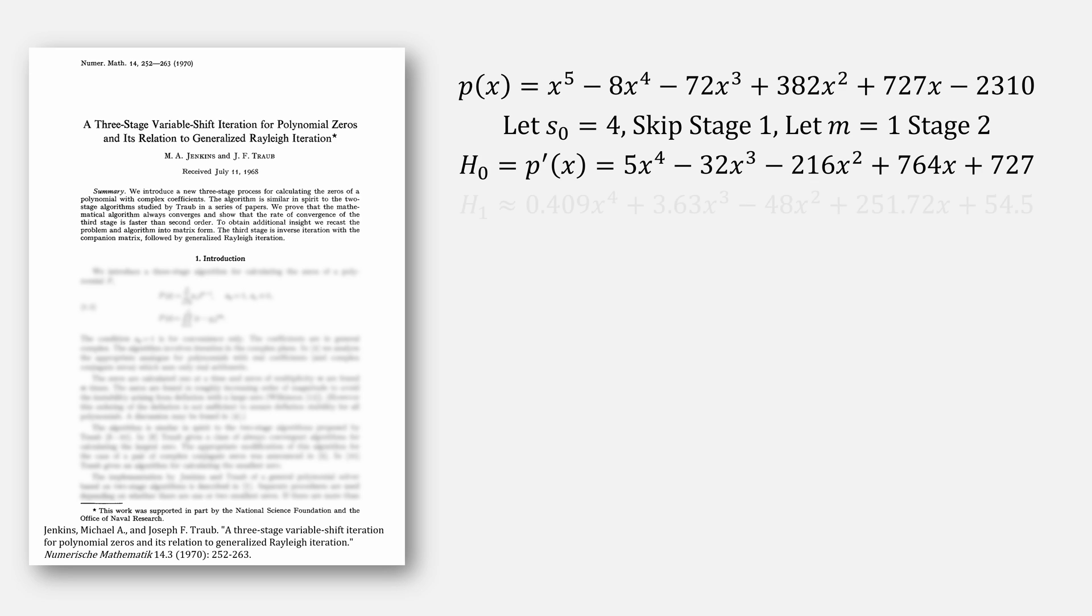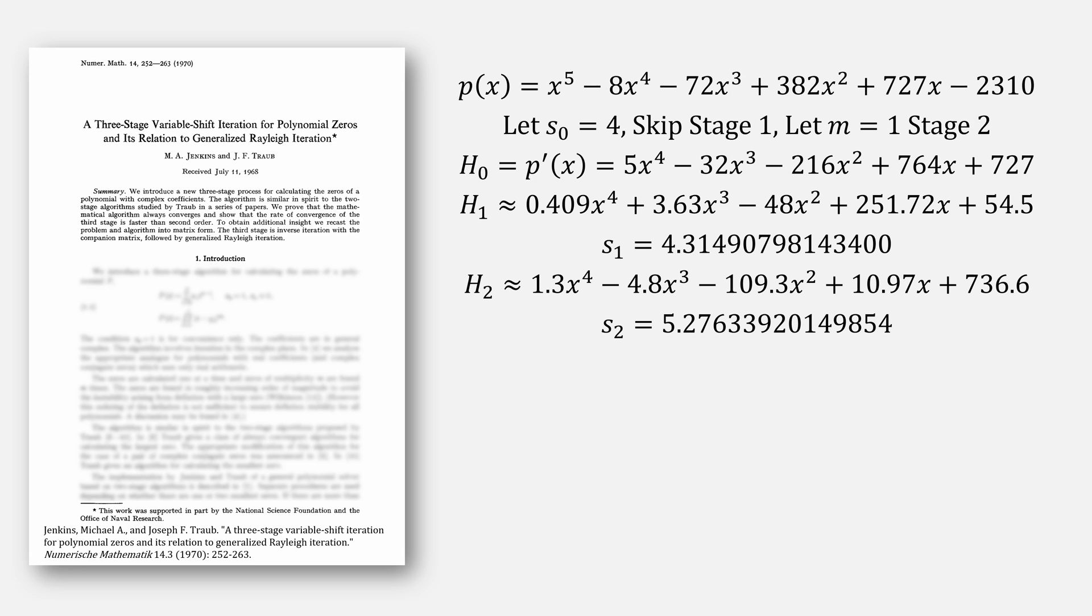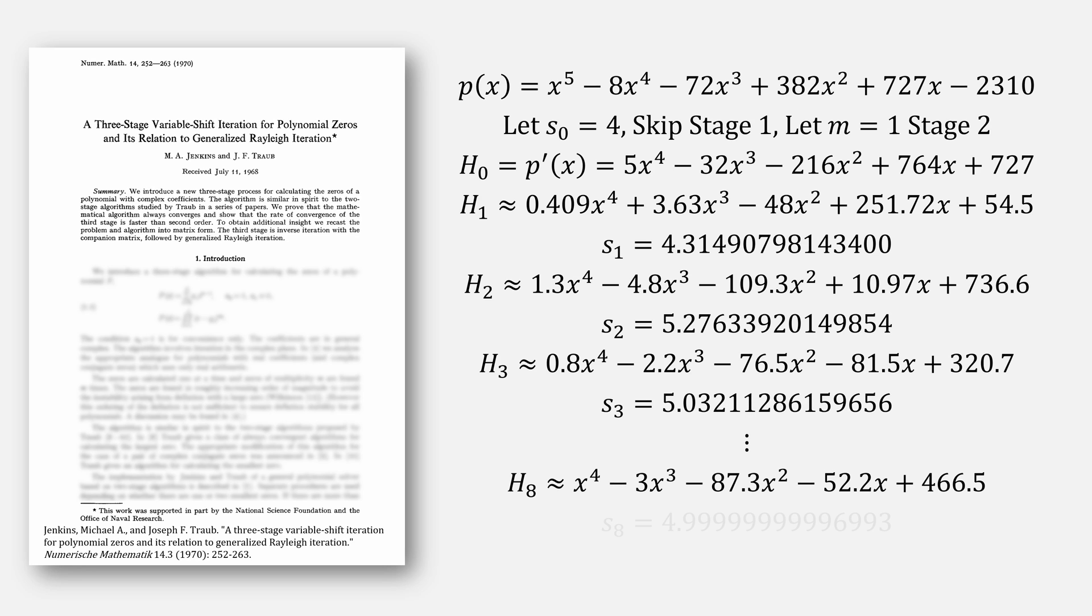we're actually going to just use one iteration of the fixed second stage. Starting with first our h0 being the derivative, using our first iteration of a fixed h, and then updating our value for s. This then leads us to update our value for h, to then update s again, update h, and update s. Eventually this converges on the value of 5 for s.